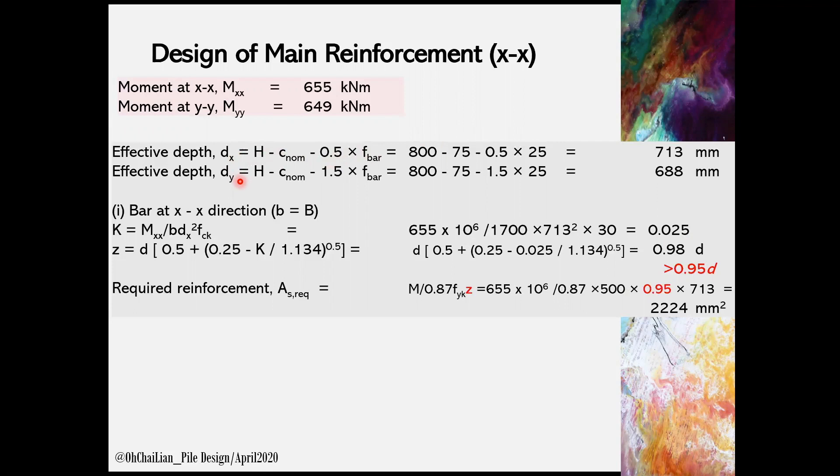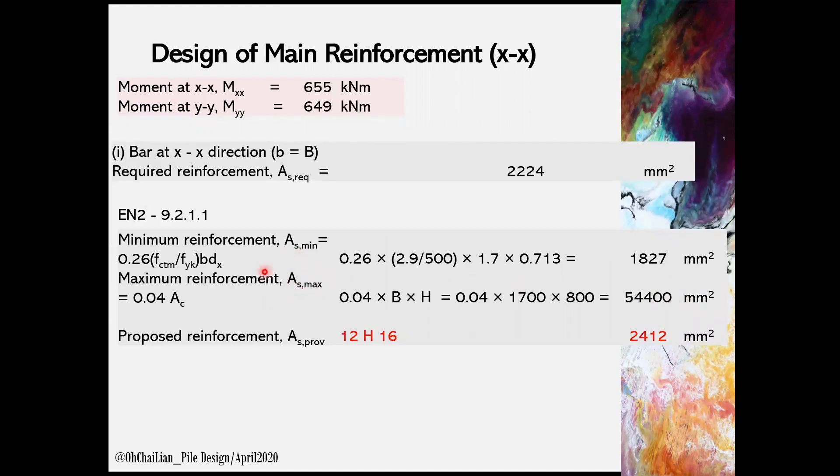At X direction, B in the equation refers to the width of the pile cap B. Then we can determine the K and Z using the equations shown. It is to note that the limiting value for Z is 0.95d. When the calculated value Z is greater than 0.95d, Z equal to 0.95d shall be used in the next equation for determining the AS required. The AS required need to be checked against AS minimum and AS maximum suggested in Eurocode 2, Section 9.2.1.1. AS provided shall be within the upper and lower limits of these values. In this case, we can propose reinforcement 12H16 for XX direction.